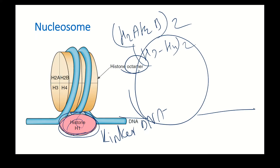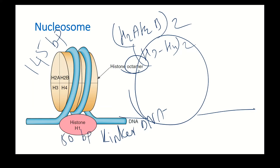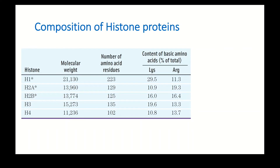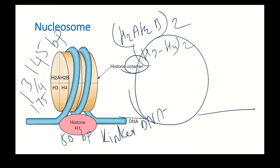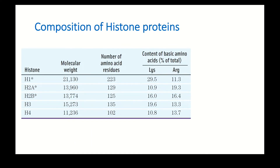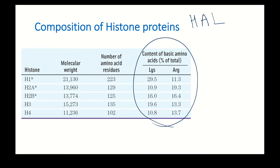In the nucleosome core particle, approximately 145 base pairs of DNA are wound around the histone octamer — this represents 1.75 turns (one complete turn plus three-quarters of another turn). The linker DNA between nucleosomes is bound by histone H1. Histones are positively charged; the main positively charged amino acids are histidine, arginine, and lysine — predominantly lysine and arginine.